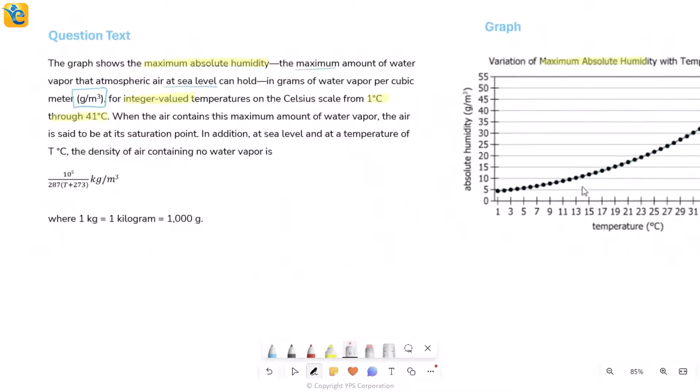Then the question goes on and gives you more information. It says when the air contains this maximum amount, at this stage you call air to be at its saturation point. That's really just a term. We must know that saturation point is exactly connected with this maximum absolute humidity level. These are kind of coming together.